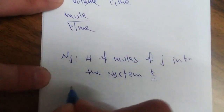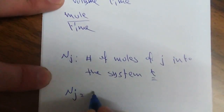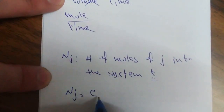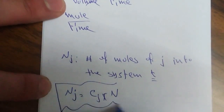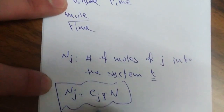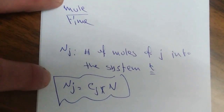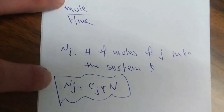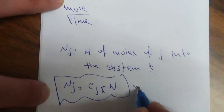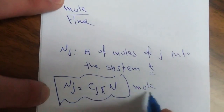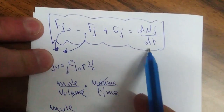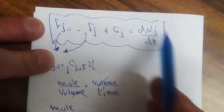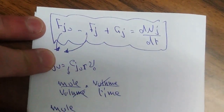والـ N of J يتمثل بـ concentration J times volume، فاليونة لعلها تطلع mol. وهو dN of J مقسم على dT فهاي كلها تطلع mol per time.